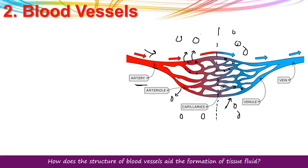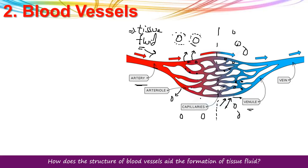Because plasma proteins remain inside the capillary, there is a higher solute concentration at the venous end, and water re-enters the capillary by osmosis — this is osmotic pressure. So at the arterial end, high hydrostatic pressure forces plasma out; at the venous end, osmotic pressure draws water back in. The plasma that has left the capillaries surrounds and bathes the tissue cells — we call this tissue fluid. It is simply a change of location: the same plasma, now outside the capillaries, is called tissue fluid.